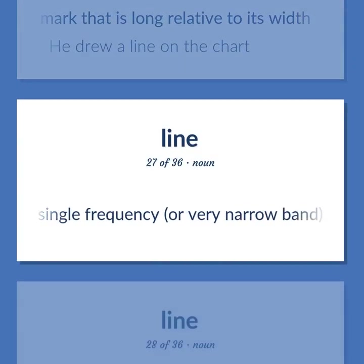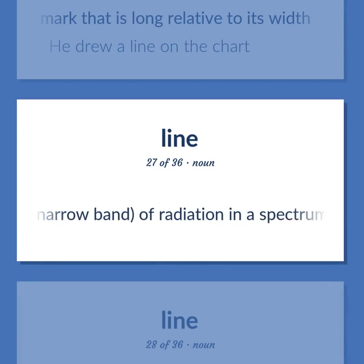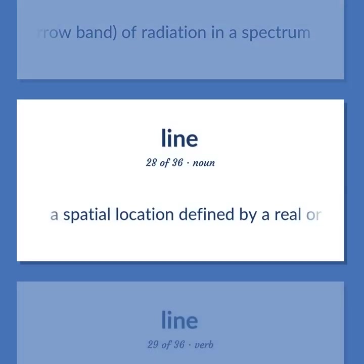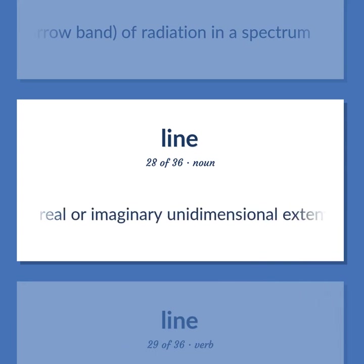Line: a single frequency or very narrow band of radiation in a spectrum. Also: a spatial location defined by a real or imaginary unidimensional extent.